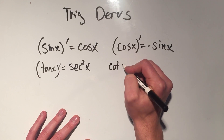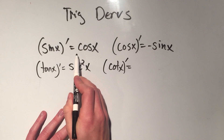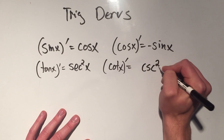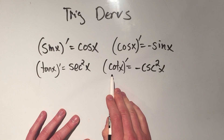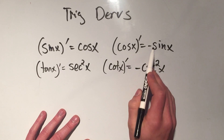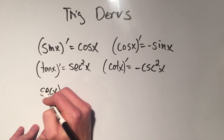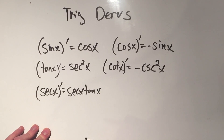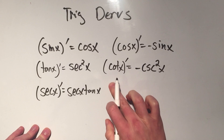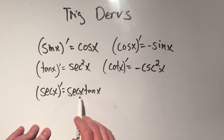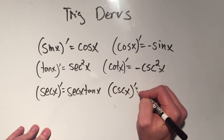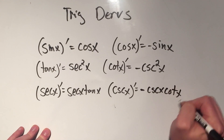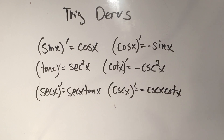The derivative of cotangent: if tangent was secant squared, cotangent must be negative cosecant squared. So the derivative of tangent is secant squared, and the derivative of cotangent is negative cosecant squared — all the co-functions get a minus sign. The derivative of secant is secant tangent. And following the pattern, cosecant is negative cosecant cotangent. You really only have to memorize three and then just match them up.